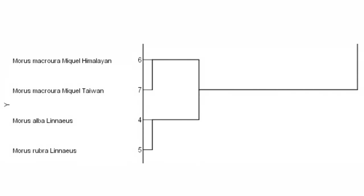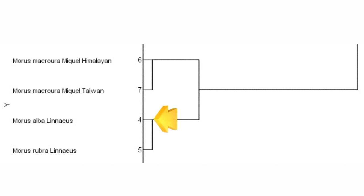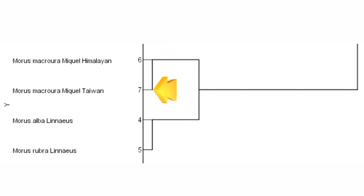Morus alba and Morus rubra were differentiated based on the inflorescence, as their inflorescence were shorter than 2.5 cm, while in Morus macrura it was longer than 2.5 cm. Morus alba and Morus rubra were determined based on the syncarp. Morus alba produced a white syncarp 1 to 2.5 cm long, while Morus rubra produced a red blackish-purple syncarp 2 to 3 cm long. Morus macrura Himalayan produced a white and long syncarp 6 to 12 cm long, while Morus macrura Taiwan produced a red blackish-purple and long syncarp 6 to 12 cm long.